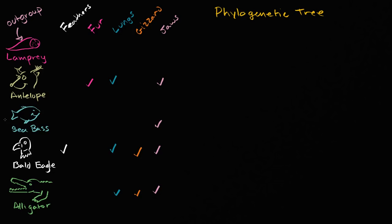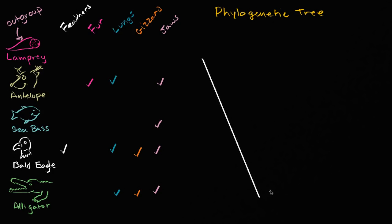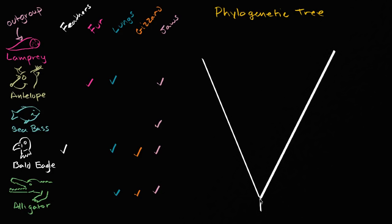So let me start to draw this tree. Deep into the past, there is a branching point where you have the common ancestor of the lamprey and everything else we see here. There are many, many species along the way, and eventually we get a lamprey in present time.